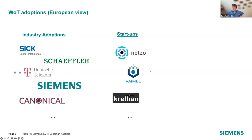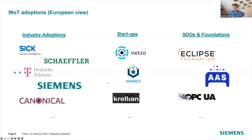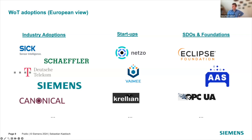There are also startups using Web of Things, such as Netzo, ViMe, and Quillian for building and smart home scenarios. Existing SDOs and foundations are also adopting Web of Things — Eclipse has projects supporting it, including ThingWeb and Eclipse Ditto. The Asset Administration Shell activity has a sub-model using Web of Things, and the OPC UA Foundation also uses the Web of Things Thing Description in its new standard.